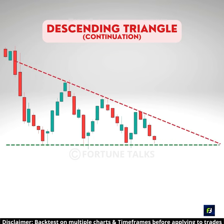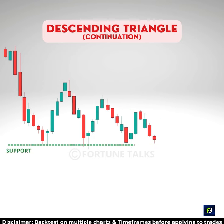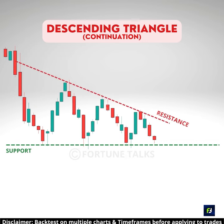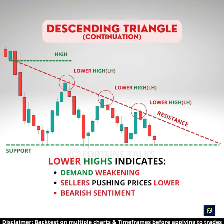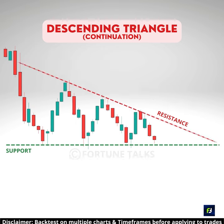The descending triangle, or falling triangle pattern, consists of a flat support line that connects the lows of the pattern and has a descending trend line that connects various lower highs, which shows that the demand is reducing and the sellers are slowly pulling the price down, thereby strengthening a bearish bias.